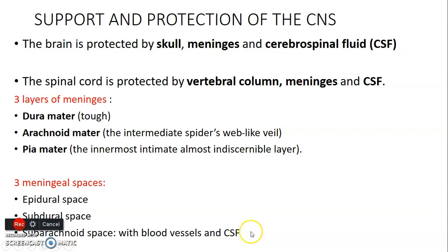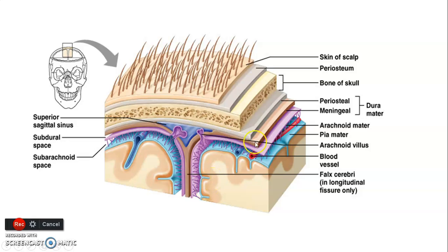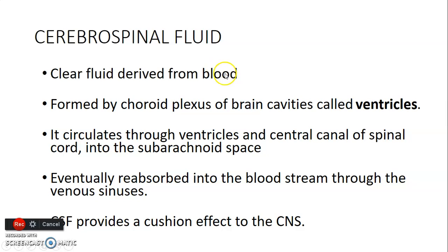Looking at the layers: you have your scalp, periosteum around the bone, the skull bone which is formed of three layers — outer table, diploe, and inner table — then the endosteal layer of the dura mater. Dura mater has two layers: an inner meningeal and an outer endosteal layer. Then you reach the arachnoid mater, the subdural space, and then the subarachnoid space before you get to pia. The subarachnoid space contains the blood vessels. CSF is a clear fluid derived from blood, formed by the choroid plexus of the brain ventricles. It circulates through the ventricles, then into the central canal of the spinal cord, into the subarachnoid space, and is eventually reabsorbed into the dural venous sinuses at the level of the superior sagittal sinus.